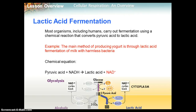Lactic acid fermentation is the other type. Most organisms, including humans, carry out fermentation using a chemical reaction that converts pyruvic acid to lactic acid. An example: the main method of producing yogurt is through lactic acid fermentation — anything with 'lact' relates to dairy. Lactic acid fermentation of milk uses harmless bacteria. The chemical equation: pyruvic acid and NADH react to make lactic acid and NAD+. No carbon dioxide is produced during lactic acid fermentation.